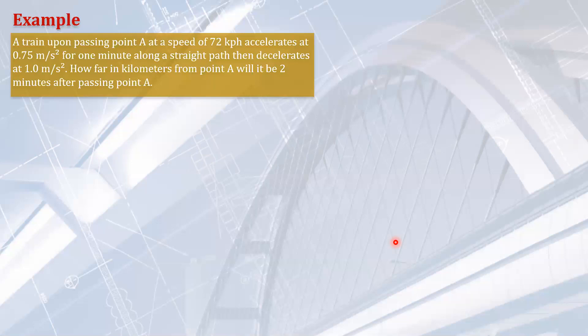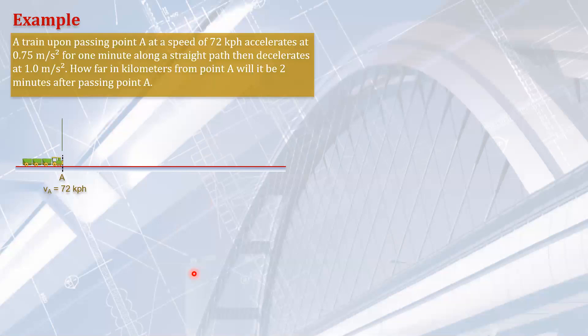Let's solve this problem. There's a train upon passing point A, so let's draw the figure. The train passed point A at a speed of 72 kph. To make this easy, let's convert this to meters per second. Take note that 1 meter per second is 3.6 kilometers per hour, so you divide by 3.6, giving you 20 meters per second. So we will use meters per second; our distance is in meters and our time is in seconds.